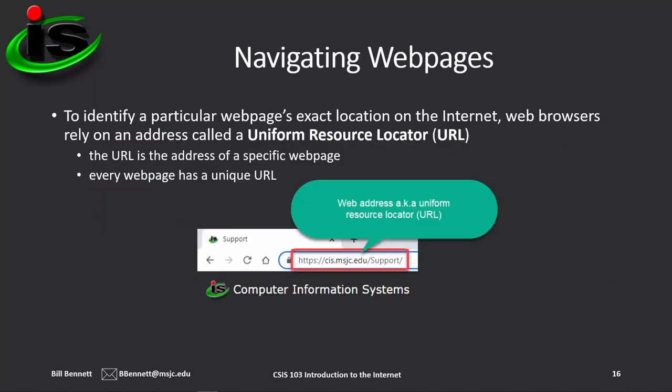To identify a particular web page's exact location on the internet, web browsers rely on an address called the Uniform Resource Locator, or URL. The URL is the address of a specific web page, and every web page has a unique URL. In the example here, the URL has the protocol HTTPS — the secure HTTP — then the server and domain information, and then the folder information.